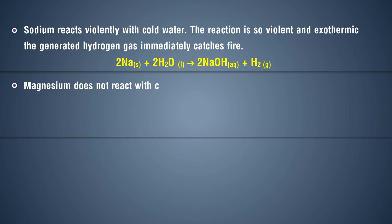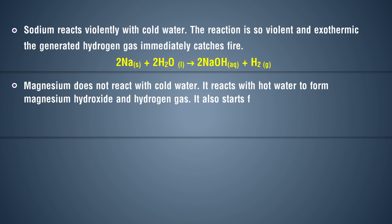Magnesium does not react with cold water. It reacts with hot water to form magnesium hydroxide and hydrogen gas. It also starts floating due to the bubbles of hydrogen gas sticking to its surface.